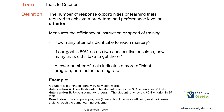Let's start with trials to criterion, because it's one you're most likely familiar with. This is the number of response opportunities or learning trials required to achieve a predetermined performance level criterion. In other words, how many attempts did it take to reach mastery? If our goal is 80% across two consecutive sessions, how many trials did it take to get there? For example, if we want three checks in a row and we go check, check, X, X, check, X, check, check, check — that's nine trials to criterion.